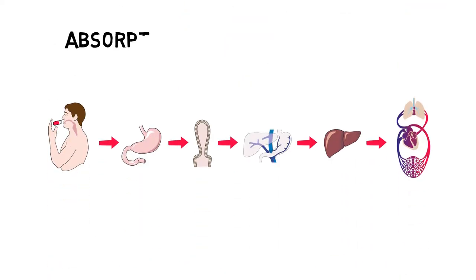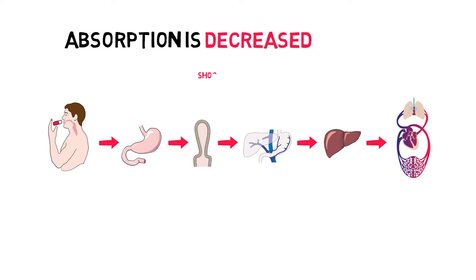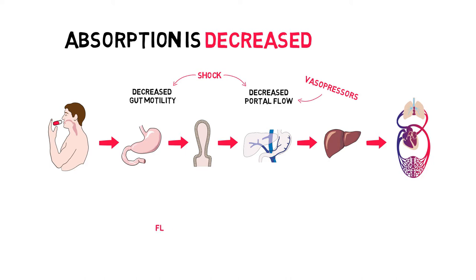For absorption: gastrointestinal absorption is decreased in most ICU patients. Any type of shock results in reduced gut motility and thus delayed gastric emptying, as well as reduced splanchnic blood flow. The use of vasopressors reduces splanchnic blood flow even more. Excessive fluid administration could cause bowel edema. And lastly, the typical ICU patient is being fed through a nasogastric tube, usually 24/7. You can imagine that the absorption of certain drugs, like levothyroxine, is compromised. All these factors decrease drug absorption through the gut.